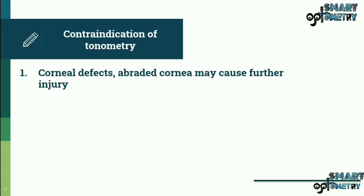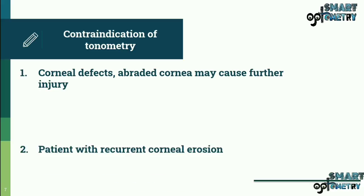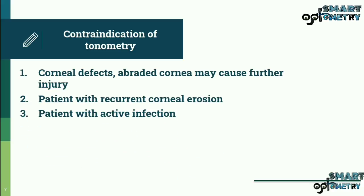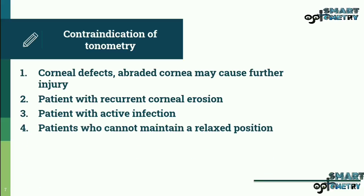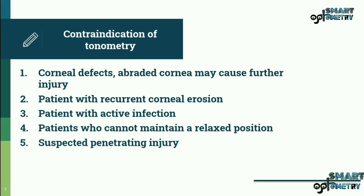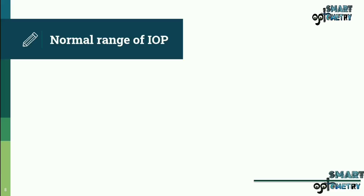Contraindications of tonometry include corneal defects — an abraded cornea may cause further injury. Other contraindications are patients with recurrent corneal erosion, patients with active infection, patients who cannot maintain a relaxed position, and suspected penetrating eye injury.